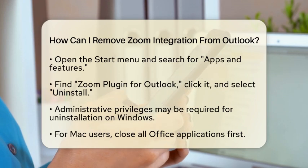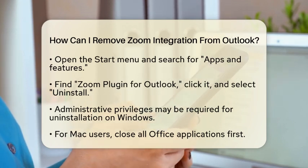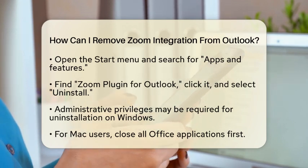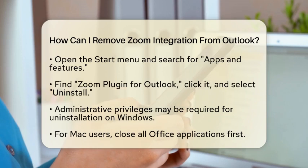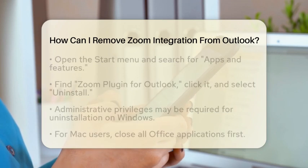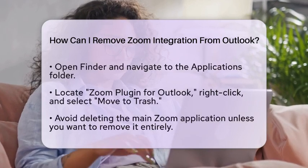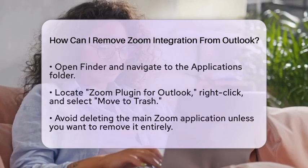If you are using a Mac, the steps are slightly different. Close all Office applications first. Then open Finder and go to the Applications folder. Look for Zoom Plugin for Outlook, then control-click or right-click the plugin and select Move to Trash, or simply drag it to the trash. Be careful not to delete the main Zoom application unless you want to remove Zoom entirely.